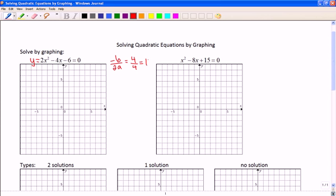So the x-coordinate is going to happen at 1, and I can use this equation here to find the y-coordinate. So 2 times 1 squared minus 4 times 1 minus 6 is 2 minus 4 minus 6, so that'll be negative 8. So there's my coordinates.